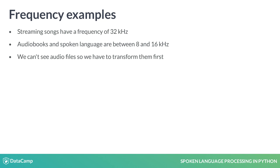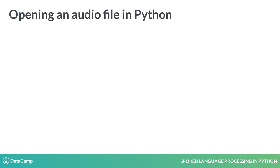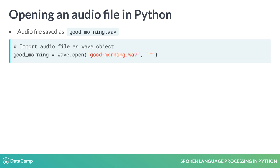We can get started with the WAV module by running the command import wav. Now we have an audio file goodmorning.wav ready to go. It contains a person saying the words "good morning." To import it, we'll use WAV's open method. Now we've saved the goodmorning.wav audio file to the variable goodmorning in the format of a WAV object.